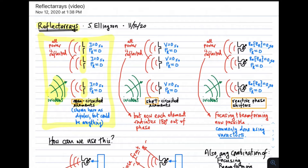Since each antenna is open-circuited, the current at the antenna terminals is zero for each antenna. Therefore, the power received by each antenna is zero. It follows that no antenna can accept power or remove power from the wave. So the only thing that can happen is that power incident on the array is scattered — reflected, but really this is about scattering in general.